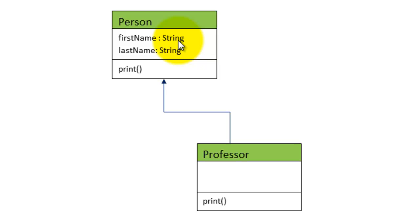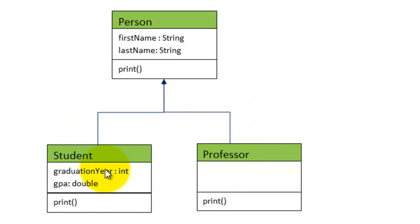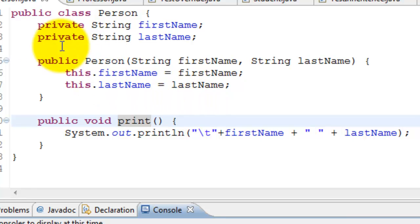What is the advantage of doing this? Once we create the Person class, we can have any number of subclasses. For example, we have a Student — Student is a Person. So let's add a Student here. Student has first name, last name, and also a graduation year and GPA, which stands for Grade Point Average, used in the United States.